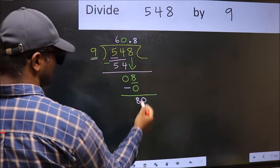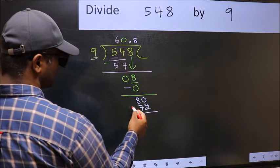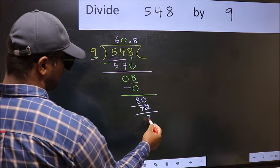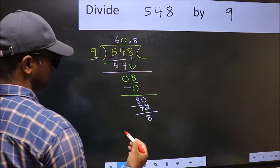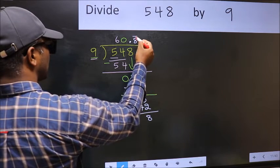Now you should subtract. We get 8. We got 8 again, that means we get bar on this number. So this is our quotient.